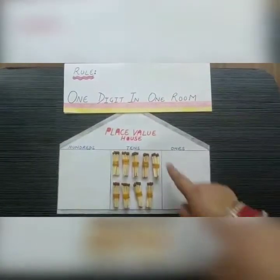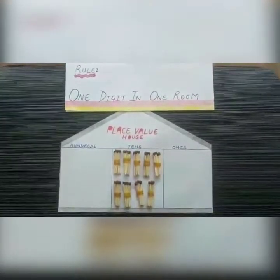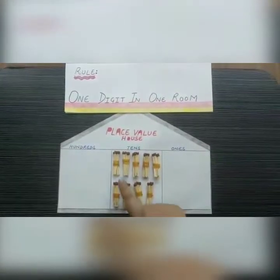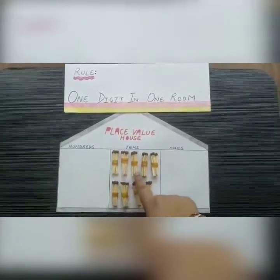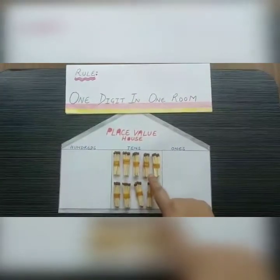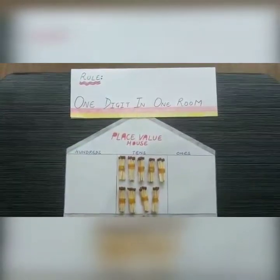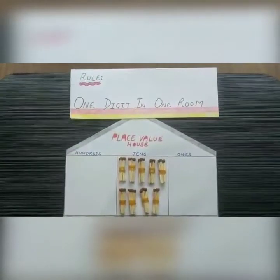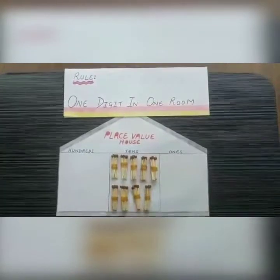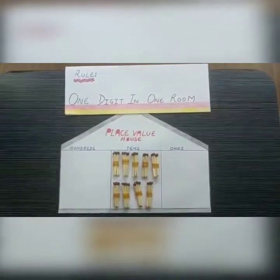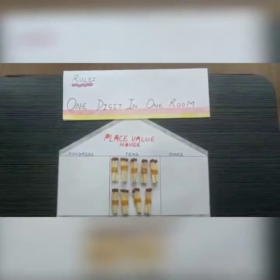Now I have nine tens in the tens place. Let's count to be sure: one ten, two tens, three tens, four tens, five tens, six tens, seven tens, eight tens, and nine tens. So what number do we get from nine tens? Absolutely correct — we get the number 90.